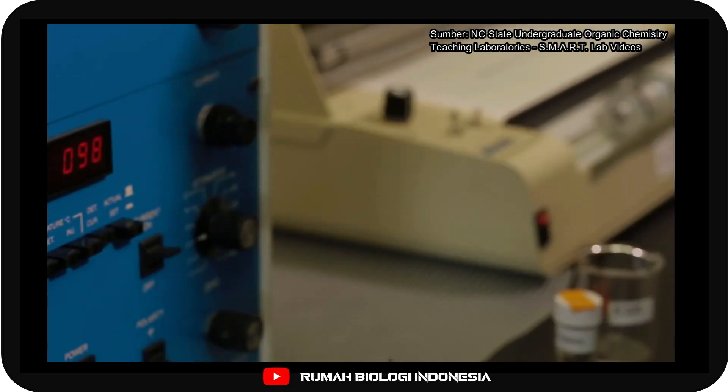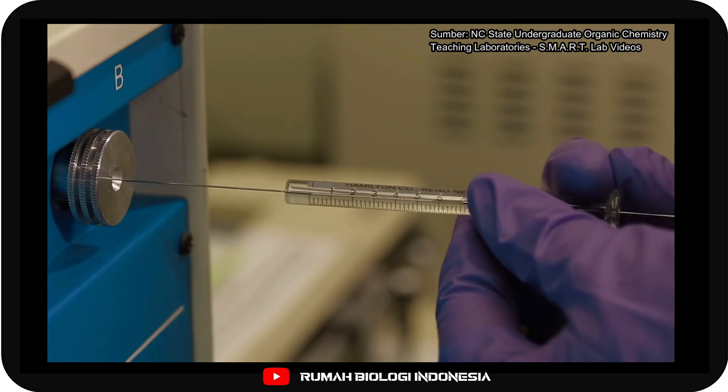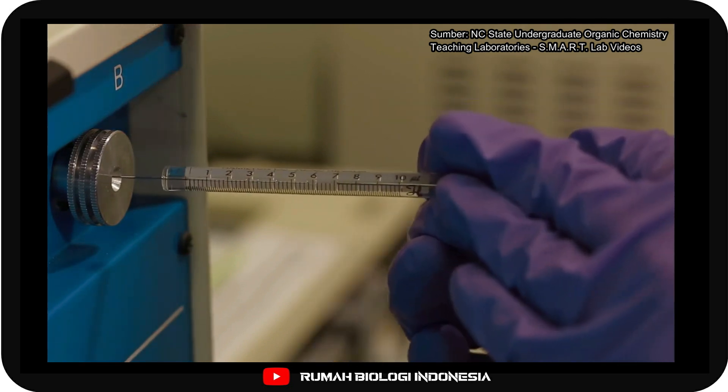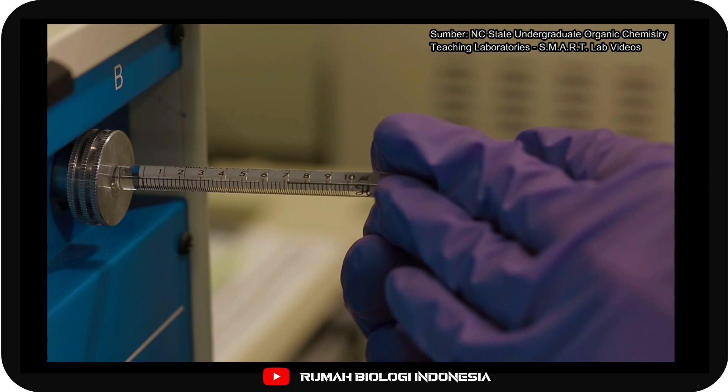Once the sample is loaded into the syringe, insert the needle into the GC injection port. You will feel resistance as you insert the syringe. Continue to insert the needle through this resistant material, called the septum, until the glass is flush with the injection port.